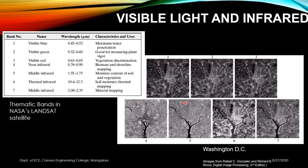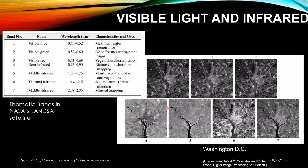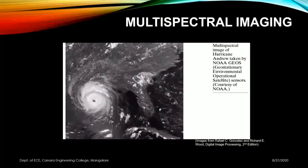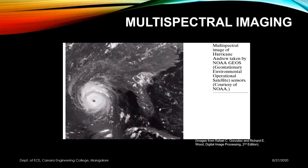This is another example using infrared — a multi-spectral image created from multiple spectrums, such as combining X-rays, infrared, and visible spectrum into a composite image. In this example, they are depicting Hurricane Andrew taken by the NOAA GOES satellite, mixing visible rays with infrared to map the storm.